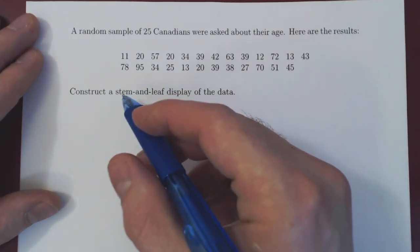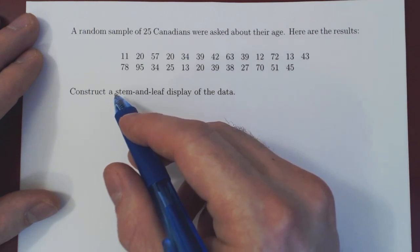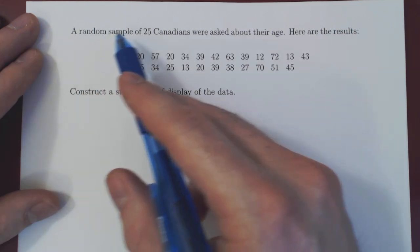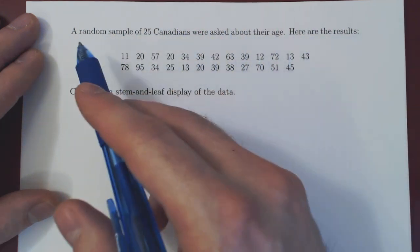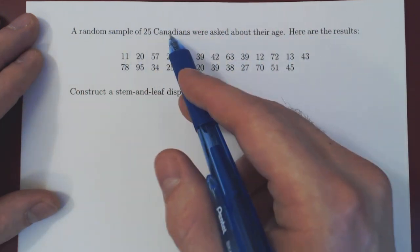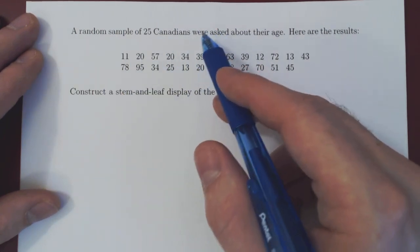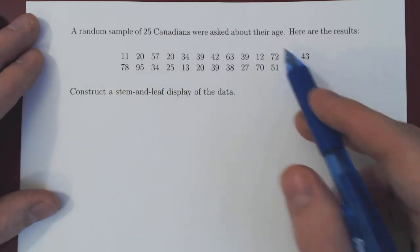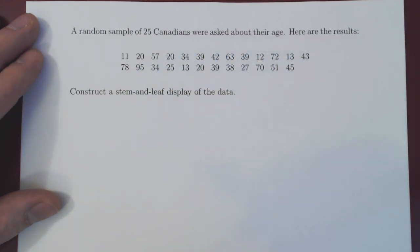Okay, so in this video we will consider an example of a so-called stem and leaf display. We have the same problem as in the previous video. We are given a random sample of 25 Canadians and we were asking about their age, so we have the exact same 25 ages as in the previous video.